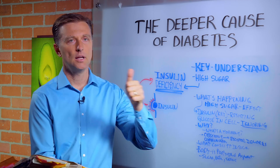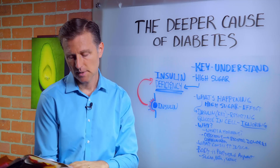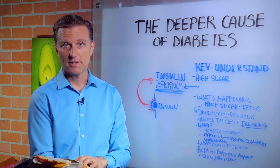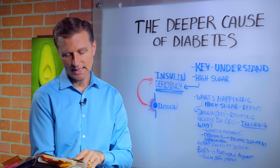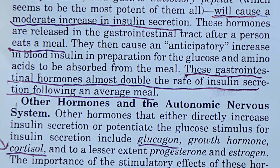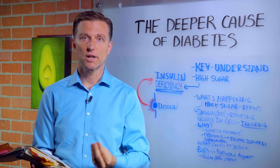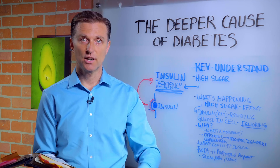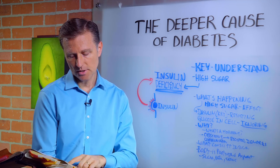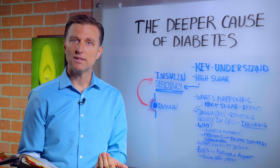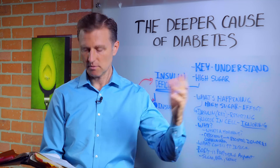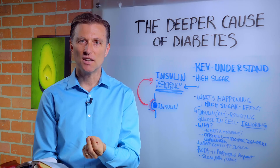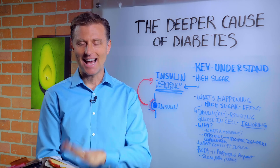So we know sugar, protein to some degree, and protein with sugar to a greater degree trigger insulin. The third thing is gastrointestinal hormones — basically hormones triggered in your digestive system when you eat. These hormones almost double the rate of insulin secretion following an average meal, meaning eating in general triggers insulin. Other hormones and the autonomic nervous system — mainly cortisol, the stress hormone — also increase insulin. But nowhere in this physiology book does it say that saturated fat triggers insulin. So saturated fat is not the cause of diabetes or insulin resistance.